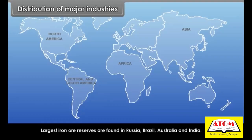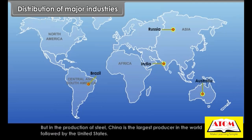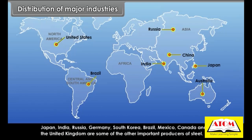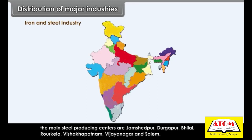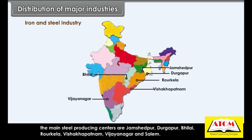Largest iron ore reserves are found in Russia, Brazil, Australia, and India. China is the largest producer of steel in the world, followed by the USA, Japan, India, Russia, Germany, South Korea, Brazil, Mexico, Canada, and the UK. In India, the main steel-producing centres are Jamshedpur, Durgapur, Bhilai, Rourkela, Vishakhapatnam, Vijayanagar, and Salem.